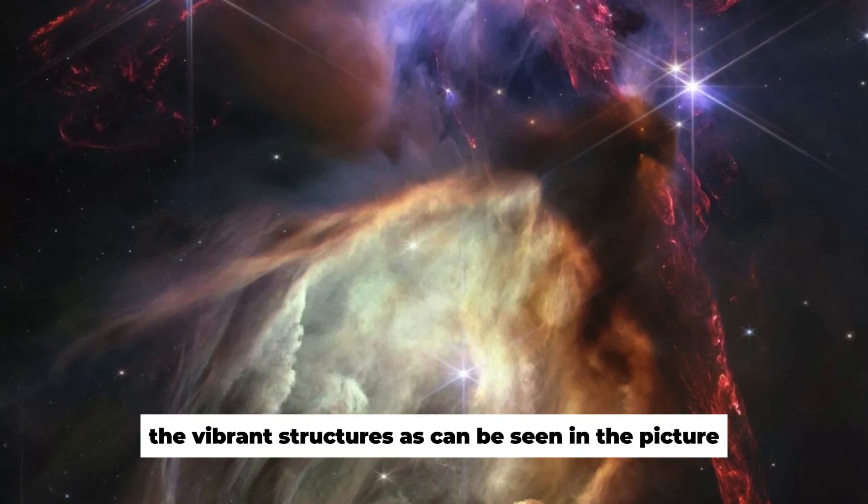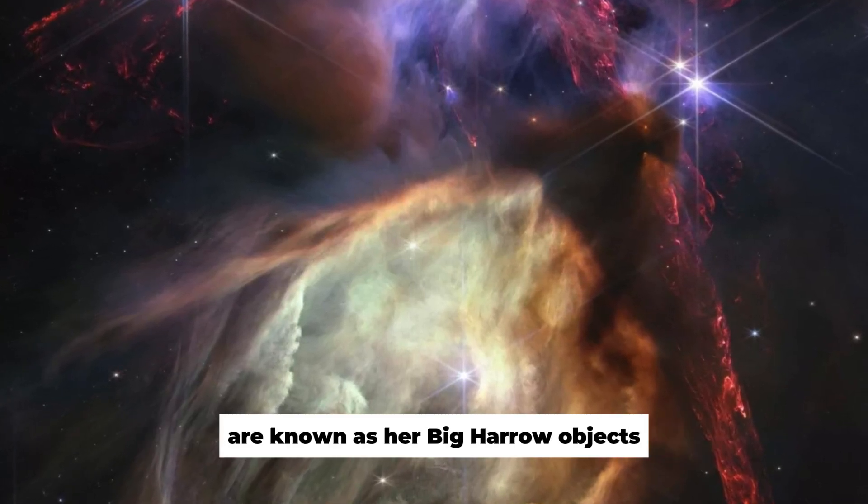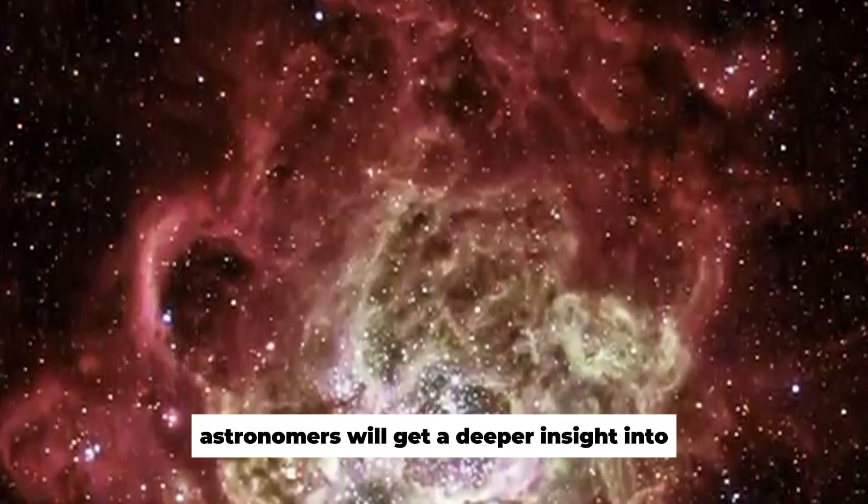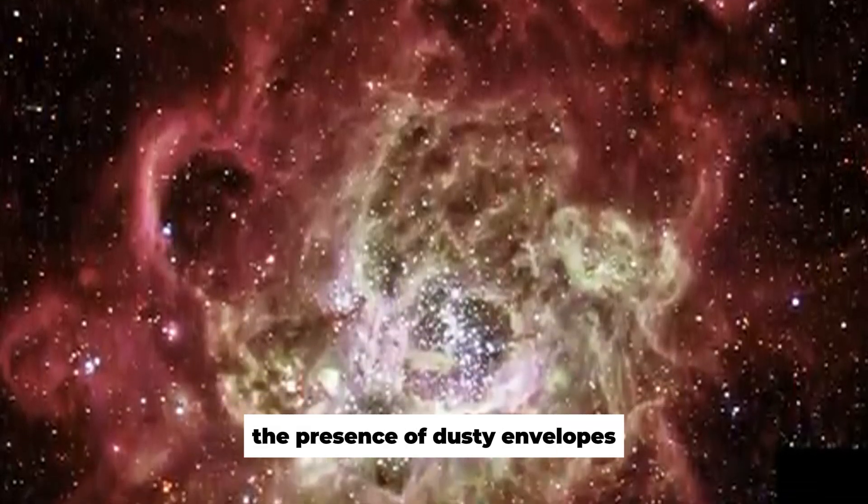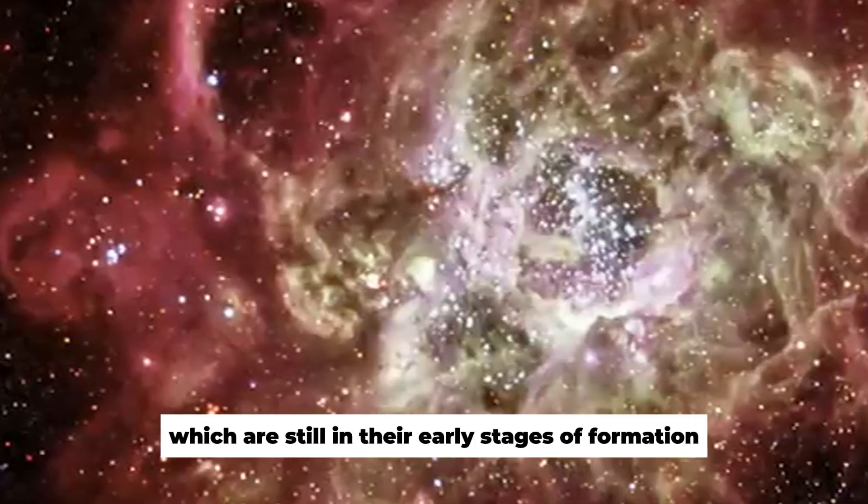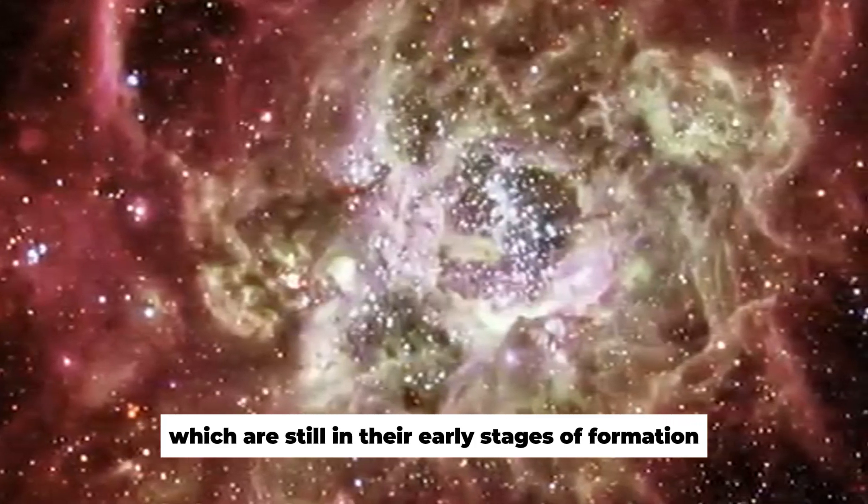The vibrant structures, as can be seen in the picture, are known as Herbig Haro objects. Thanks to this image, astronomers will get a deeper insight into the presence of dusty envelopes that shroud the protostars, which are still in their early stages of formation.